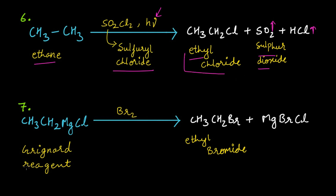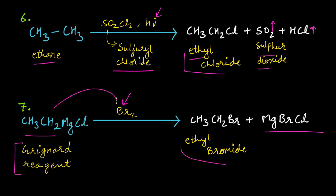The seventh method is when a Grignard reagent is treated with bromine. This is important — I will make separate videos on Grignard reagent. When the Grignard reagent is treated with bromine, you get ethyl bromide and MgBrCl. One bromine attacks at the carbon and MgCl takes the second bromine, removed as MgBrCl.